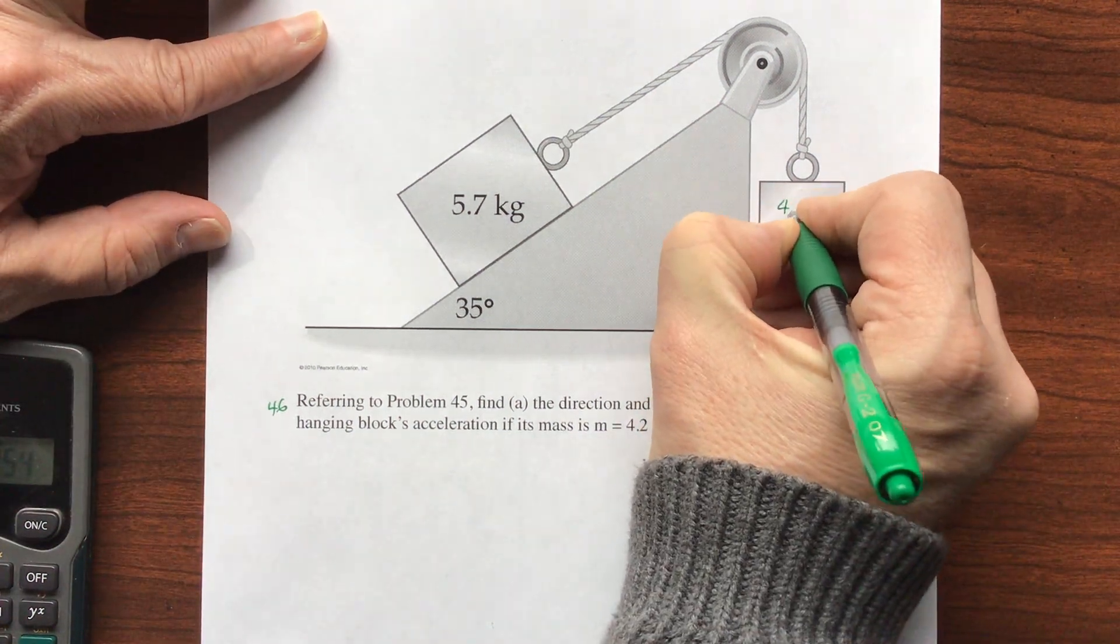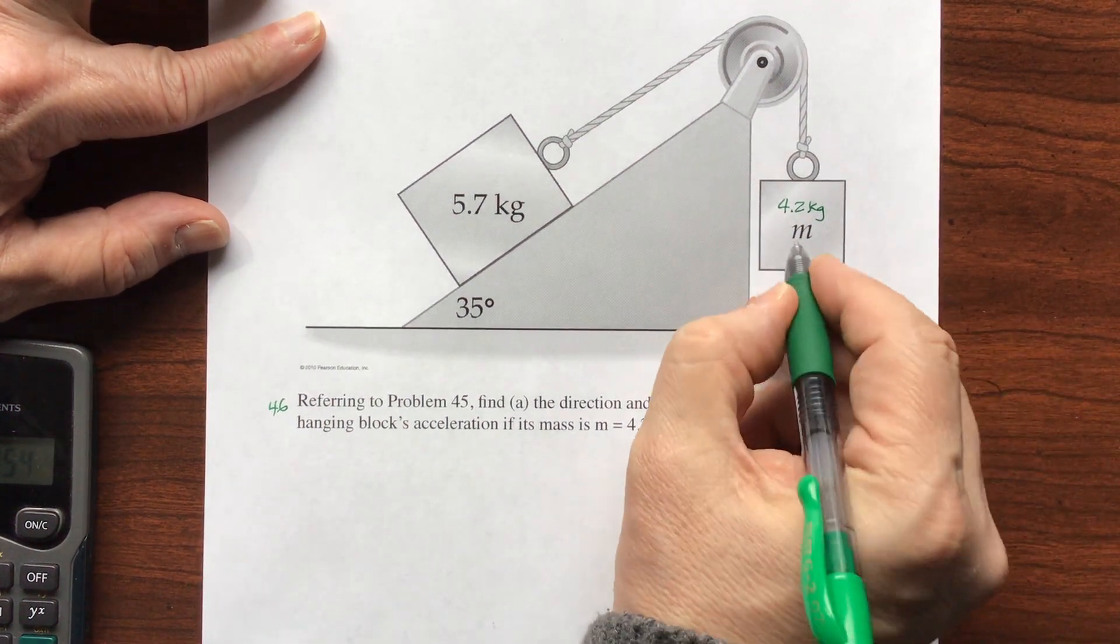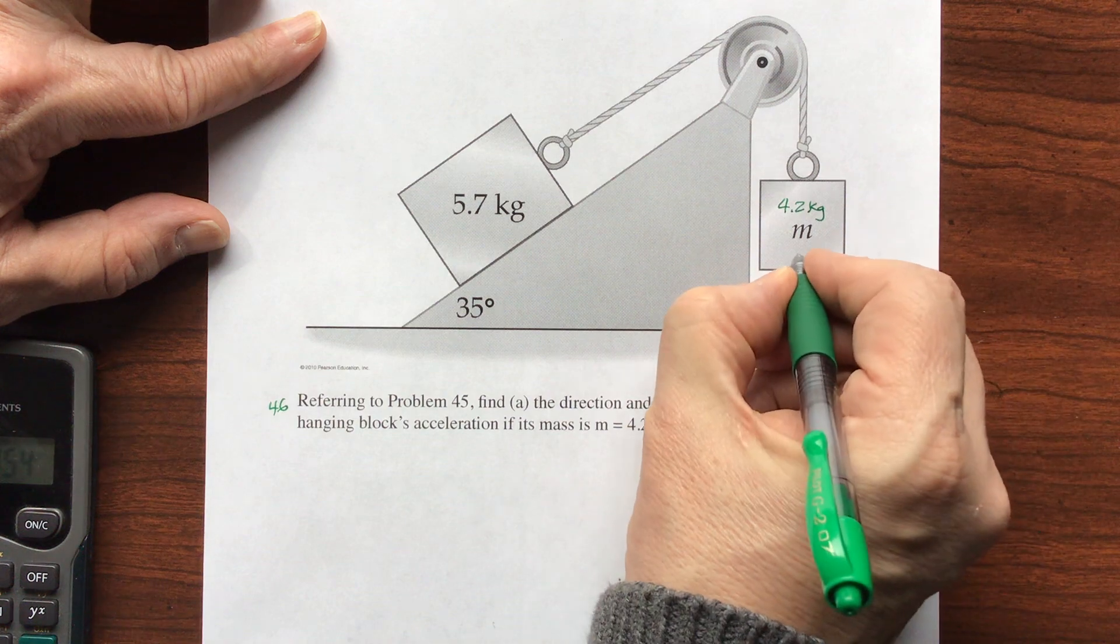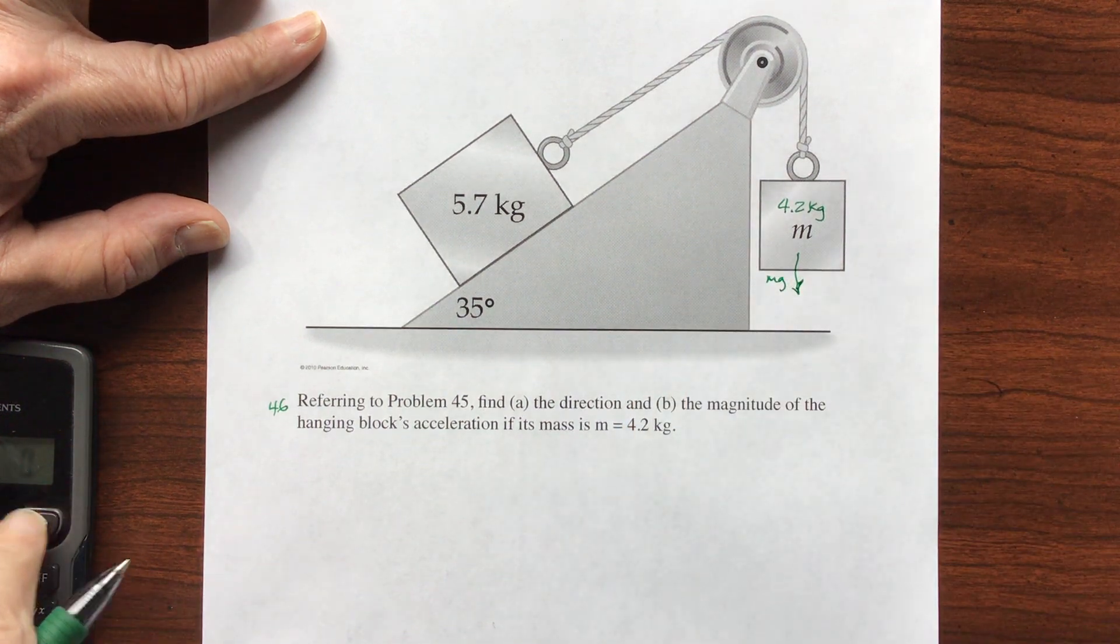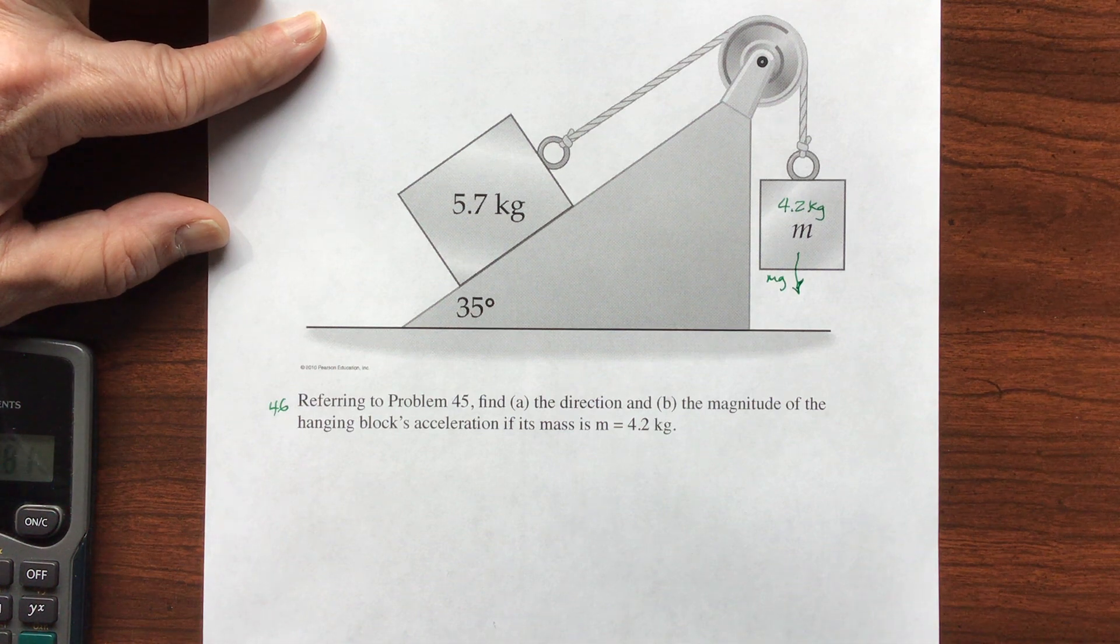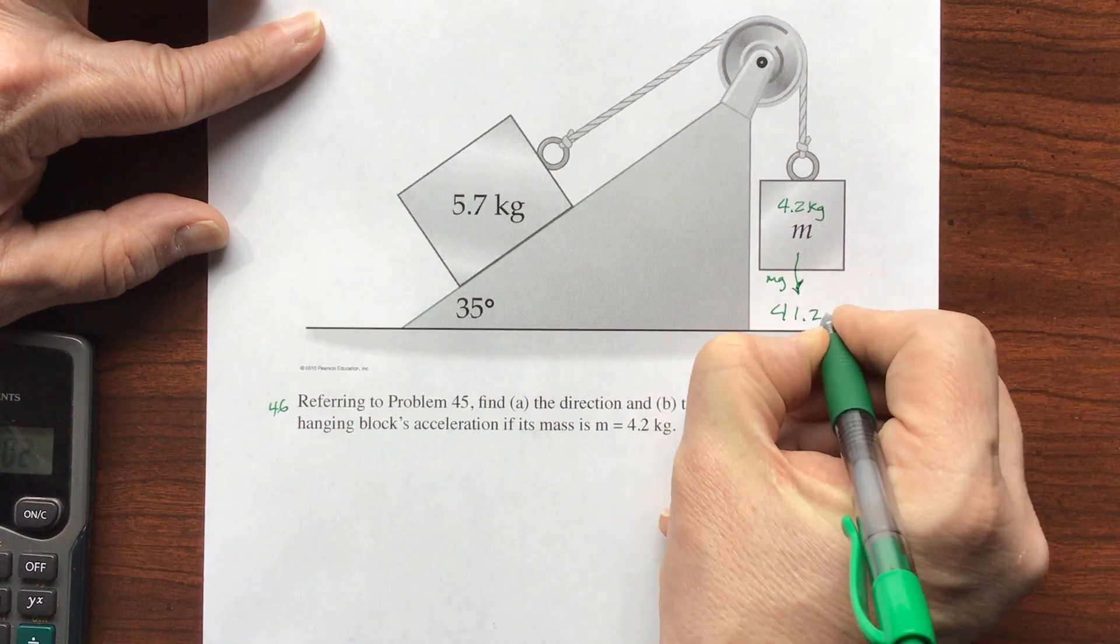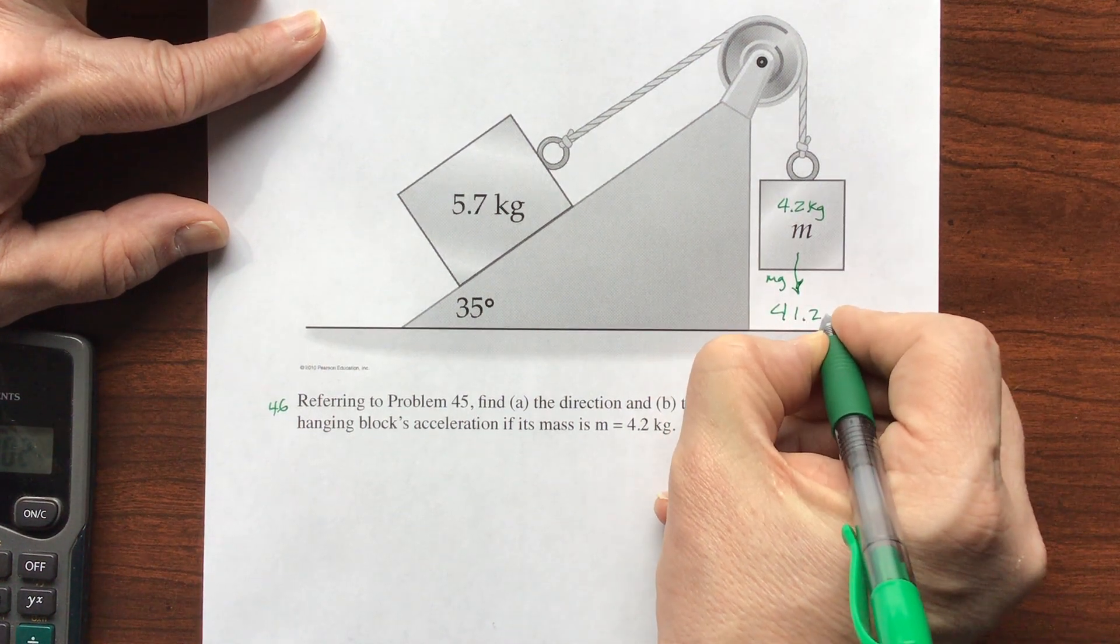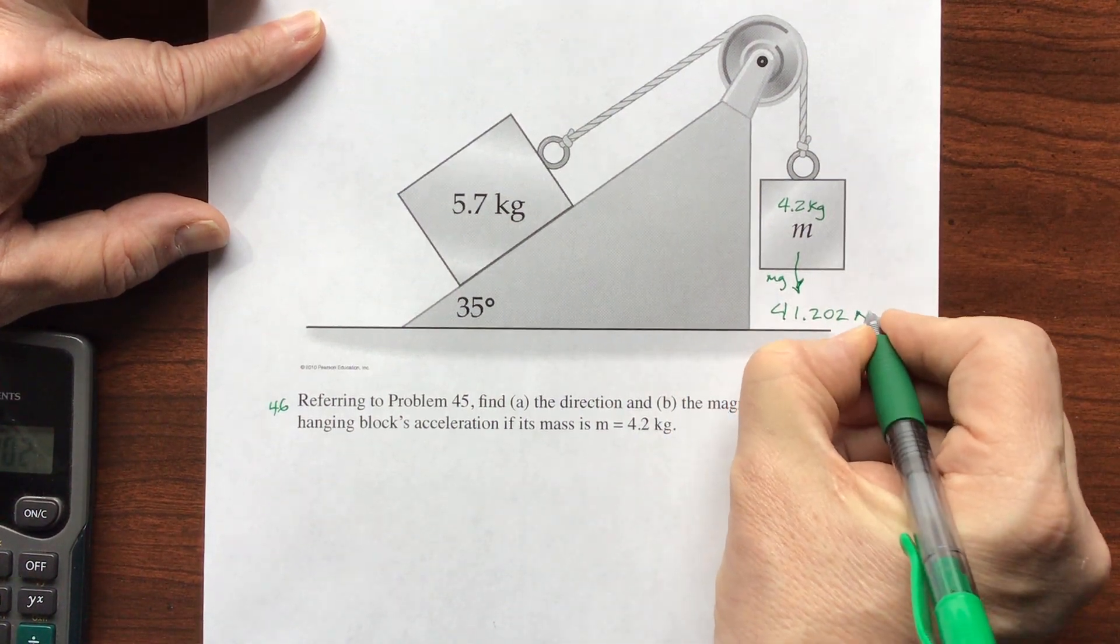So 4.2 kilograms is that, so I need to know what is its weight, what is the force that's pulling this down? So this is mg, so 9.81 times 4.2, and I've got 41.202 newtons down.